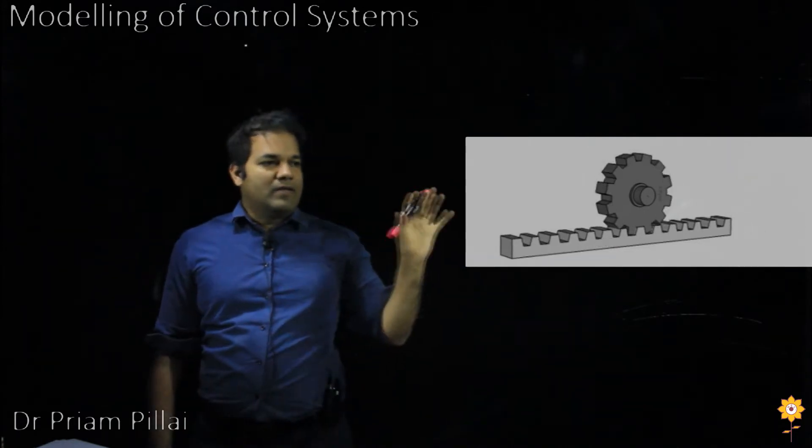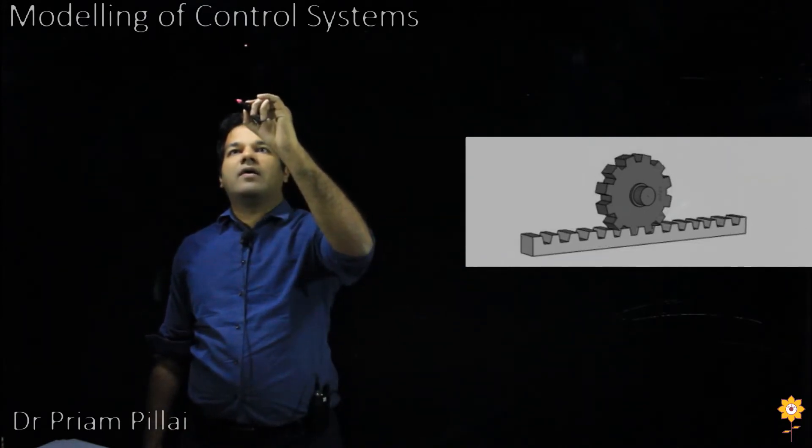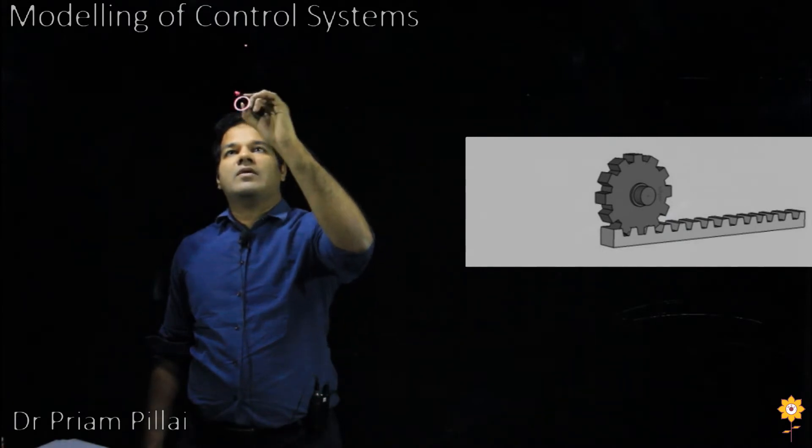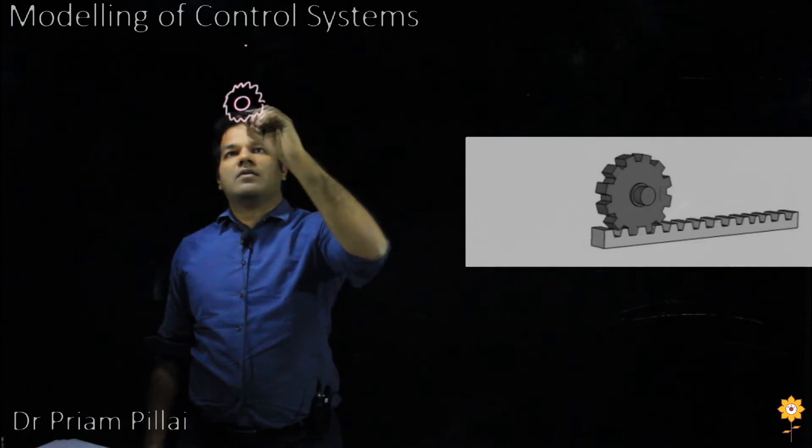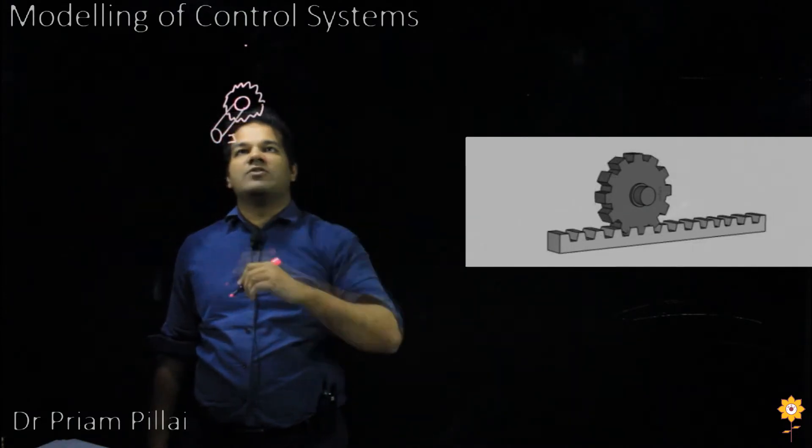We can model this using a rack and a pinion. A pinion has a gear that's attached to a shaft of a motor that has a moment of inertia J.